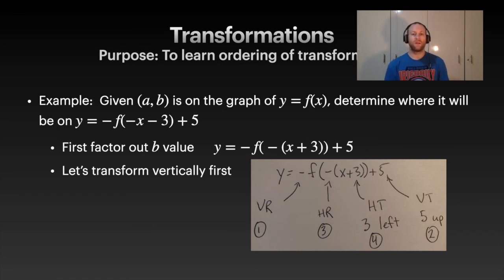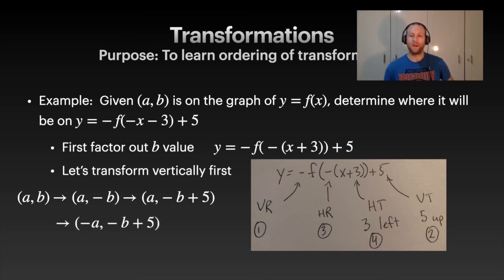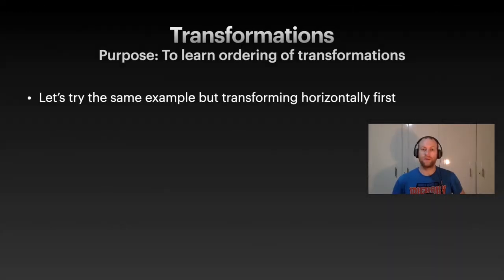Notice we did the verticals first, so we did the vertical reflection, then vertical translation, then horizontal reflection, horizontal translation. That's the ordering for doing this. We now need to apply these orderings to the point (a, b). We start with (a, b), first apply the vertical reflection, so that changes the b to −b. Then we'll do a vertical translation five up, so we're going to add 5 onto the −b. Then we do horizontal reflection, gives us −a, and then three to the left, so −a − 3. This would be our final point after it's translated: (−a − 3, −b + 5).